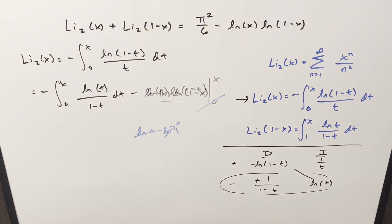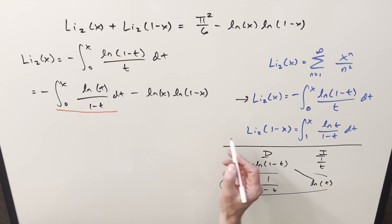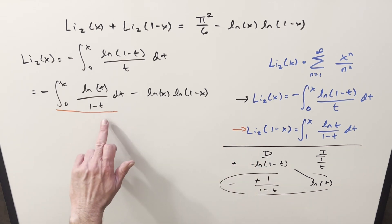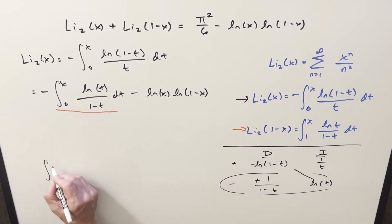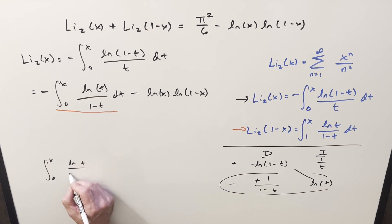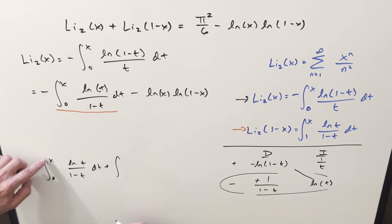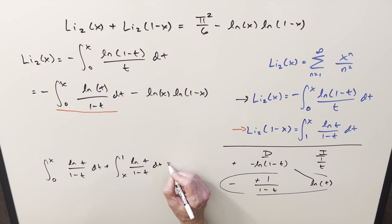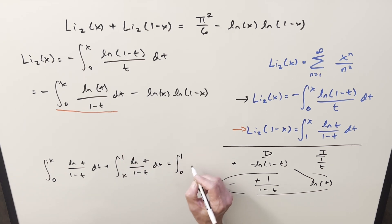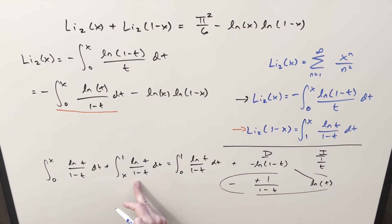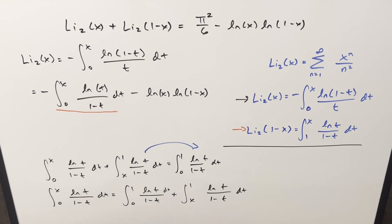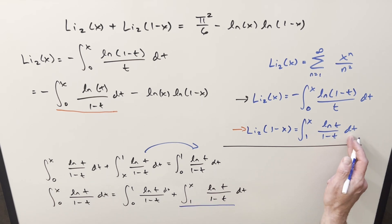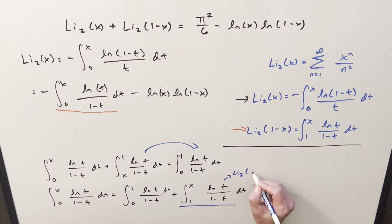This integral is really similar to our second integral formula. What I can do is take this integral from 0 to x and add a second integral from x to 1. Adding these two together, we end up going from 0 to 1 for the whole thing. Rearranging — subtracting on both sides and using the minus sign to flip the bounds — we can write this as going from 1 to x. And this is exactly the dilogarithm formula, so I can write this as Li₂(1 − x).